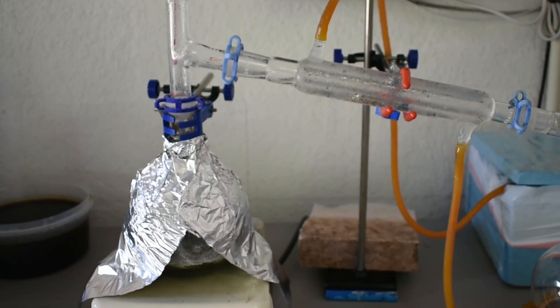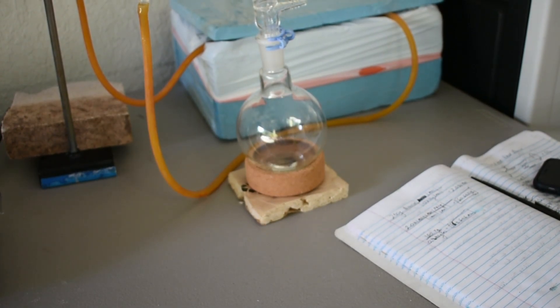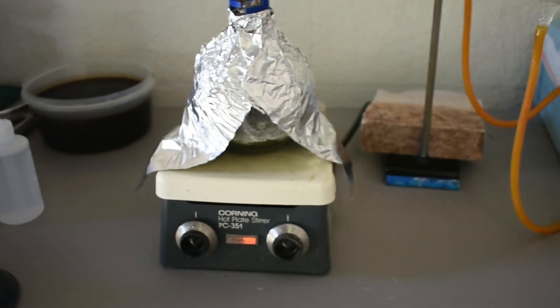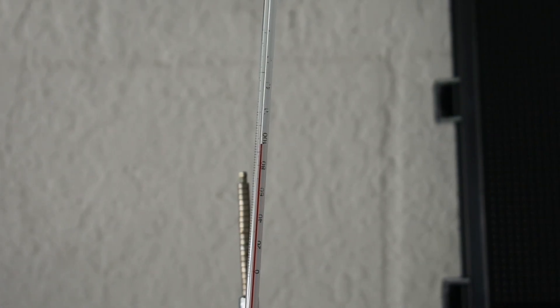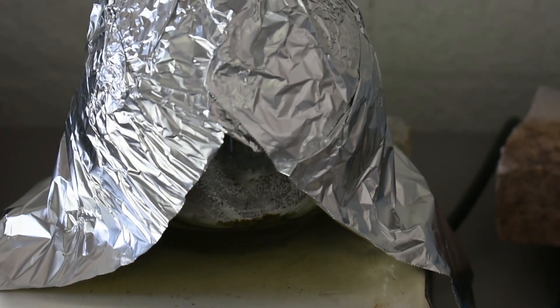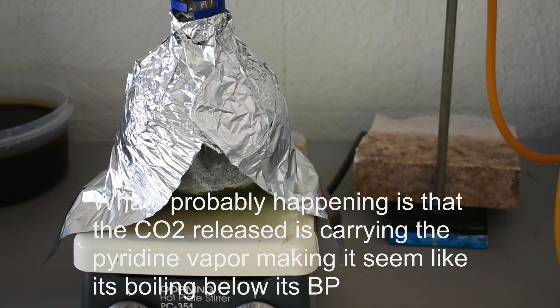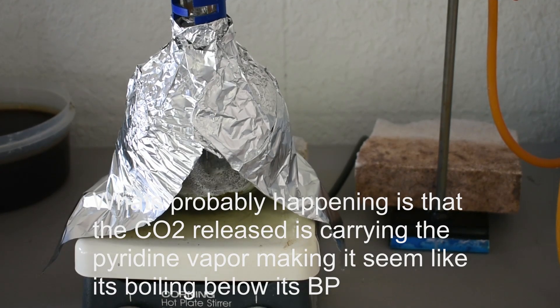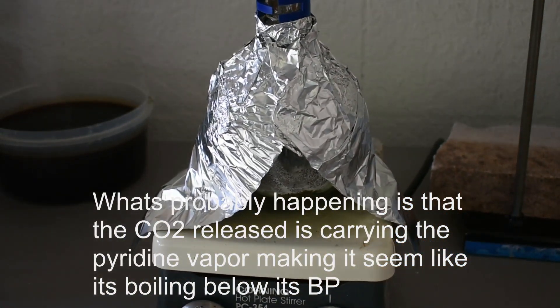The distillation has picked up quite a lot of speed. As you can see, we're getting a drop every second or so. The temperature is only at just under 100 degrees. My theory is that we're kind of steam distilling off the pyridine, as well as boiling it itself. Because its boiling point is 115 degrees. But we're obviously getting some distillate over there. My theory is that we're steam distilling, but I could be wrong.